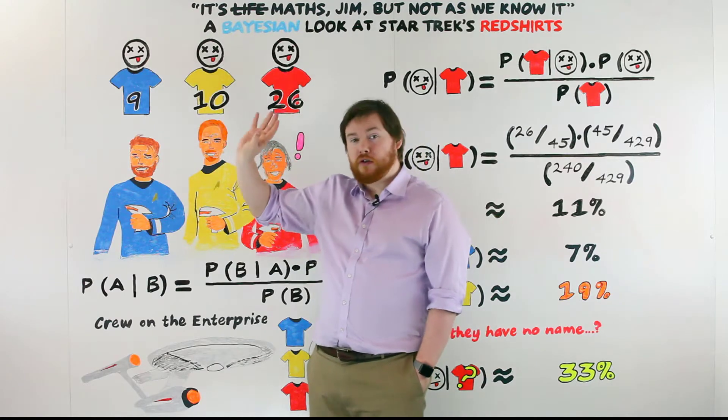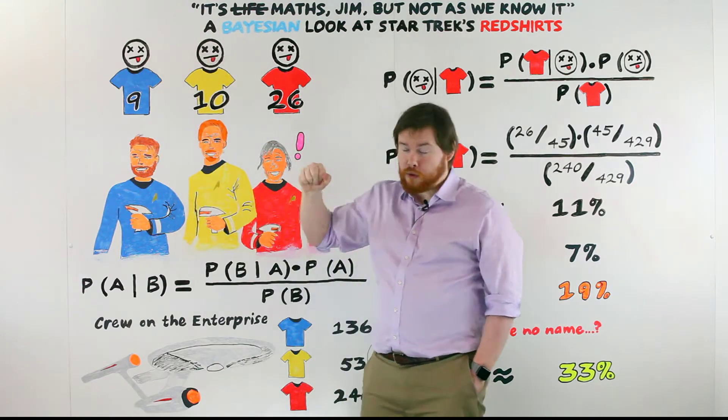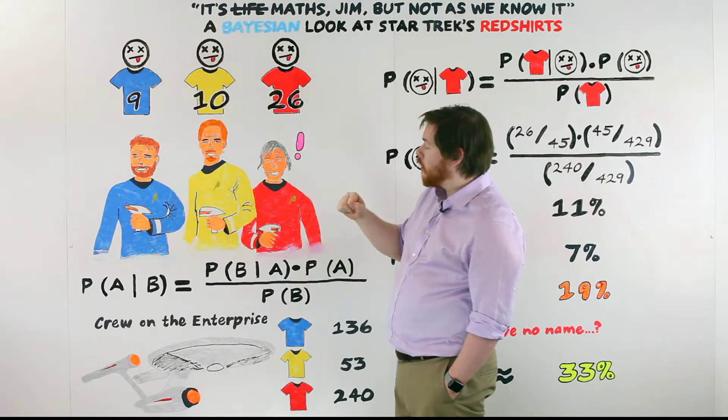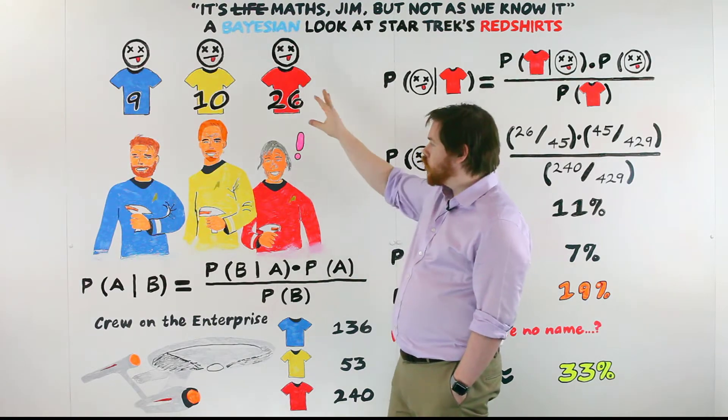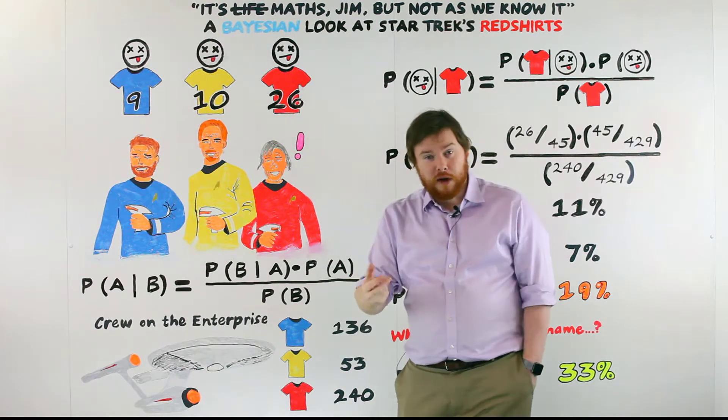And if you look at the numbers from the original Star Trek series where William Shatner was Captain Kirk, that would certainly seem to be the case. The majority of the deaths are people wearing a red shirt.